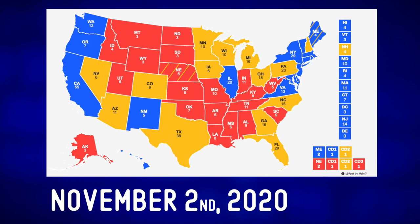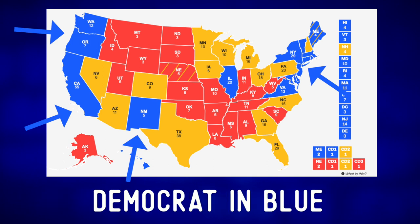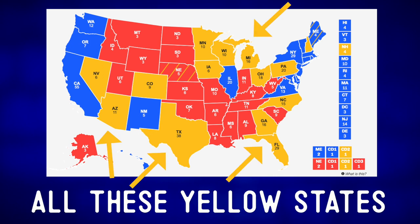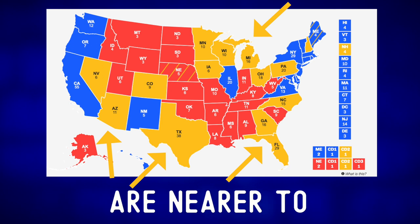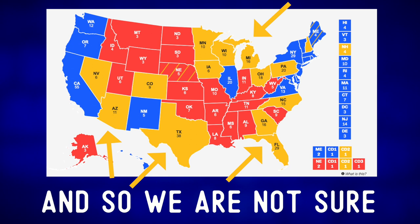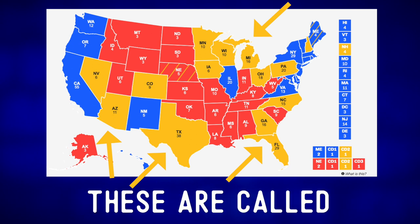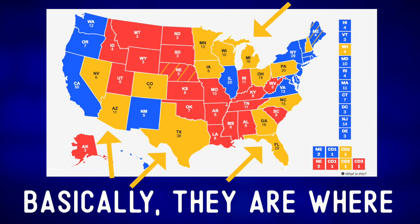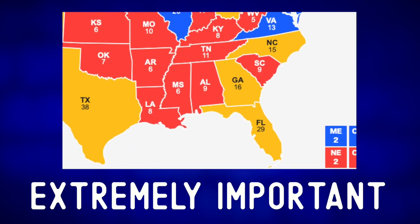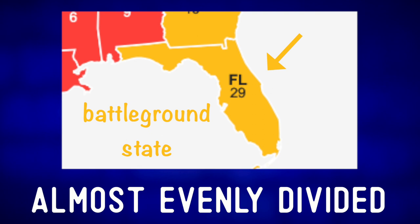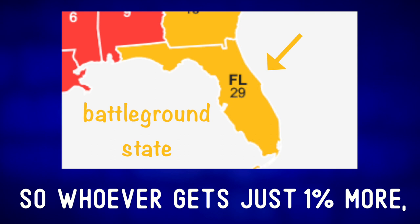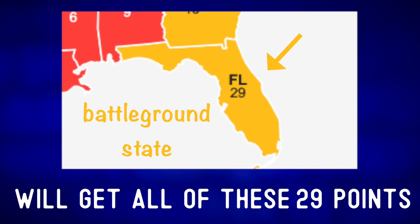Here is an updated map from November 2nd, 2020 from CNN. We can see the states they are very sure will vote Democrat in blue and the states very sure to vote Republican in red. All the yellow states are nearer to 50-50, so we are not sure where they will finish. These are called the battleground states — basically they are where the election is decided. A state like Florida is extremely important where the population is almost evenly divided, so whoever gets just one percent more will get all 29 points.